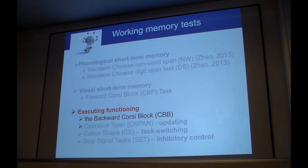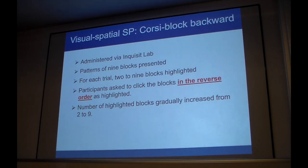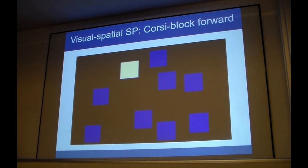We also had a backward Corsi block test, which was an executive function test involving visual memory. It has the same format as the forward Corsi block task, but this time participants had to click the blocks in the reverse order. So it looked like this. And then what they had to do is this, this, and this. And this is more demanding than the forward one.